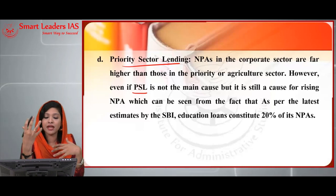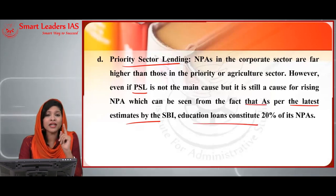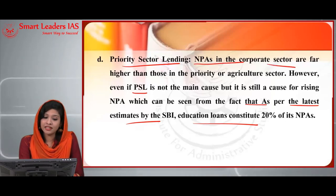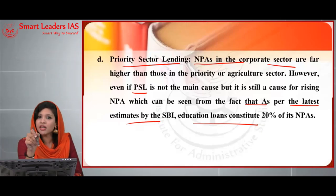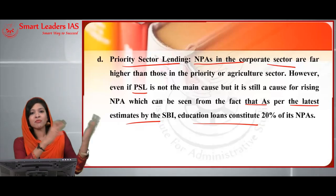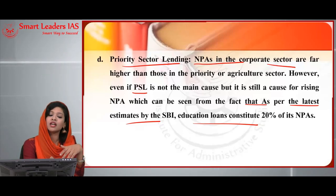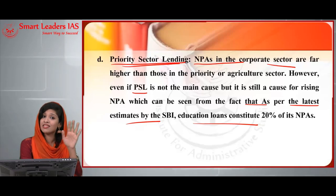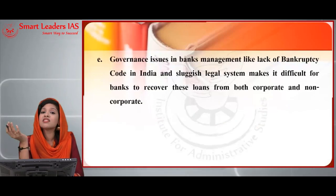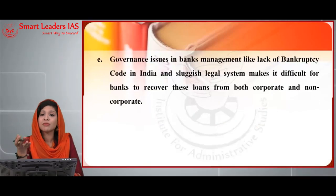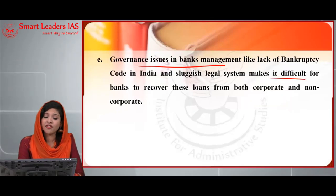While NPAs in the corporate sector are far higher than in the priority or agriculture sector, priority sector lending has still contributed to NPA growth. Governance issues are another important reason — the lack of a bankruptcy code in India and a sluggish legal system make it difficult for banks to recover loans from both corporate and non-corporate borrowers. As a result, NPA continues to rise despite regulations being in place.